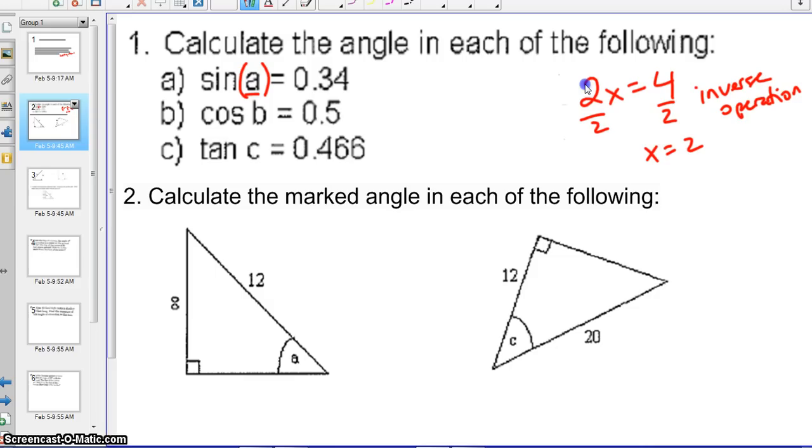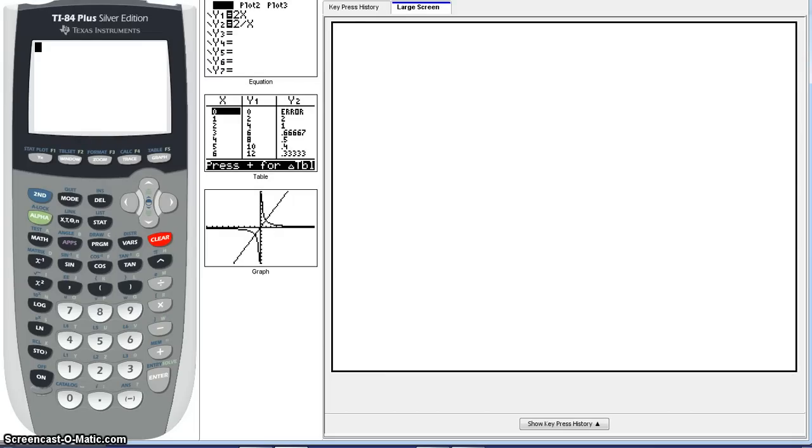So when we do it to both sides, we take the inverse sine of the left, we're going to cancel out the sine, and we're going to take the inverse sine of the right side as well. So when we go out to our calculator, we're going to type in the inverse sine. The inverse sine is directly above the sine, so you have to press 2nd and then sine of 0.34.